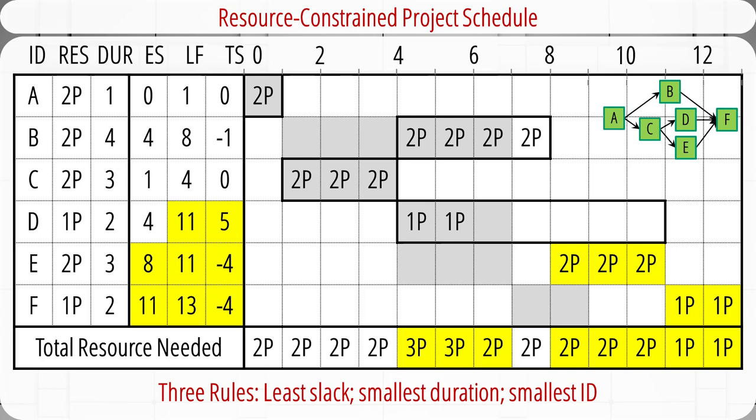Therefore, we need to delay activity E by 4 weeks so that it doesn't overlap with activity B. We update activity E's early start, late finish, and total slack. In order to keep project network relationships, we also need to delay activity F by 3 weeks, because activity F cannot start until activity E is finished. Then we update activity F's early start, late finish, and total slack. Due to the delay of activity E, activity D will enjoy more slack, so we update its late finish and total slack as well. After that, we recalculate the total number of programmers for each week.